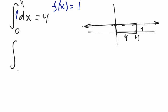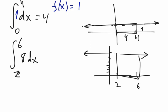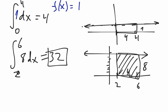Here's another one: from two to six of eight dx. The picture is y equals eight, and we're going from two to six. This is another rectangle. The length is four and the height is eight, so the area under this curve is just 32. Sometimes integrals are really easy because they're easy geometric shapes.